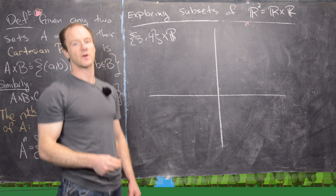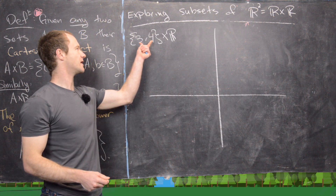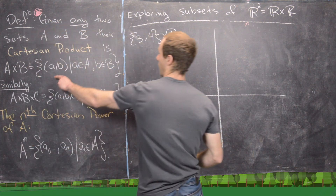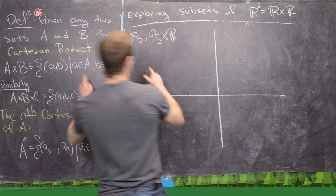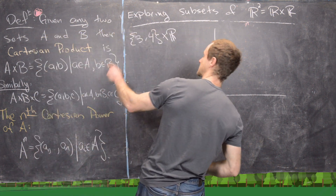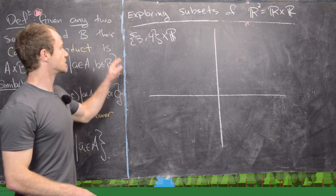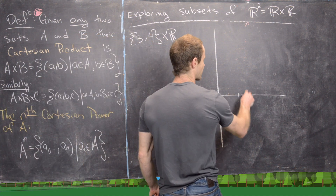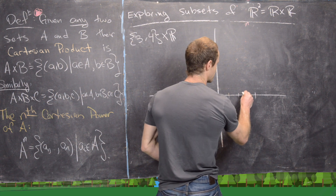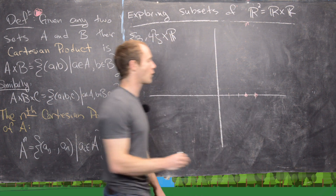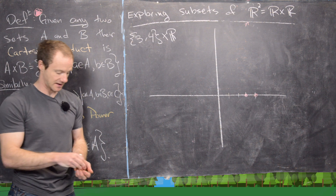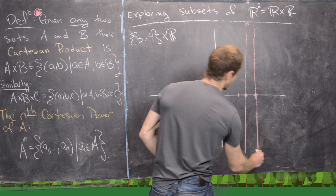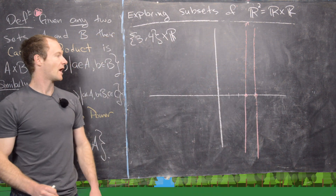Next, consider {3, 4} cross R — all ordered pairs (a, b) where a is from the set {3, 4} and b is any real number. The x-coordinate can only be 3 or 4, but the y-coordinate can be anything. This gives two vertical lines, one at x = 3 and one at x = 4, right next to each other.